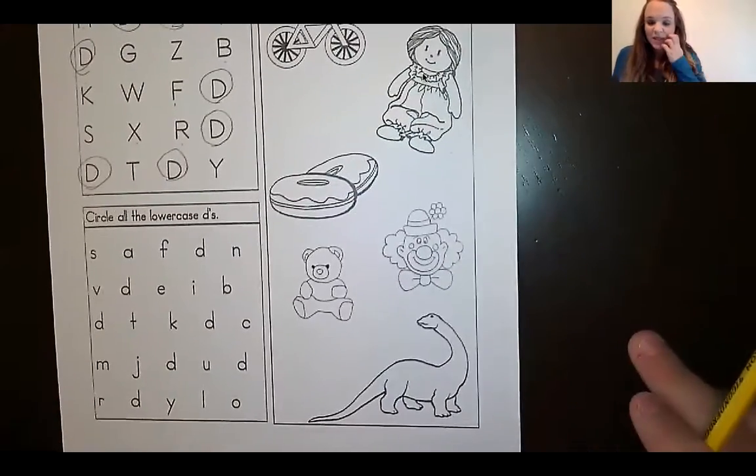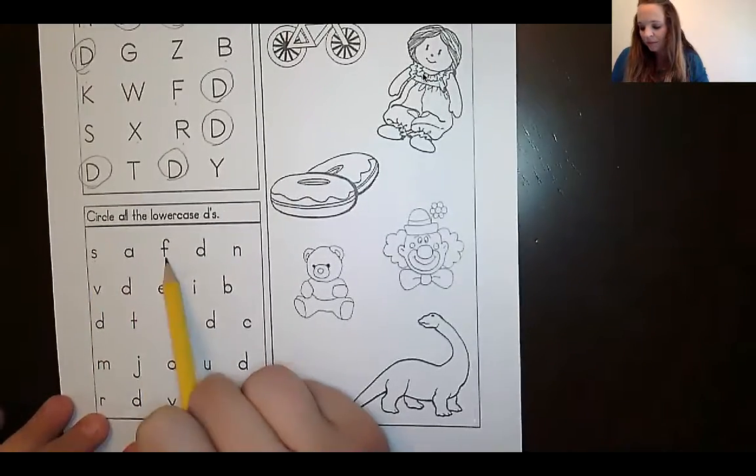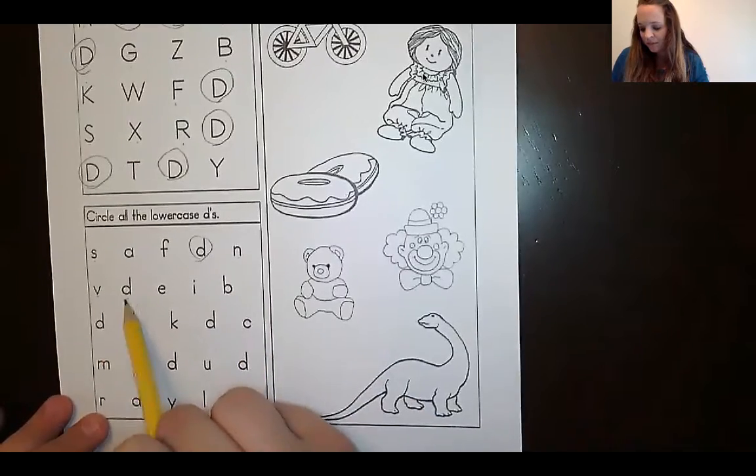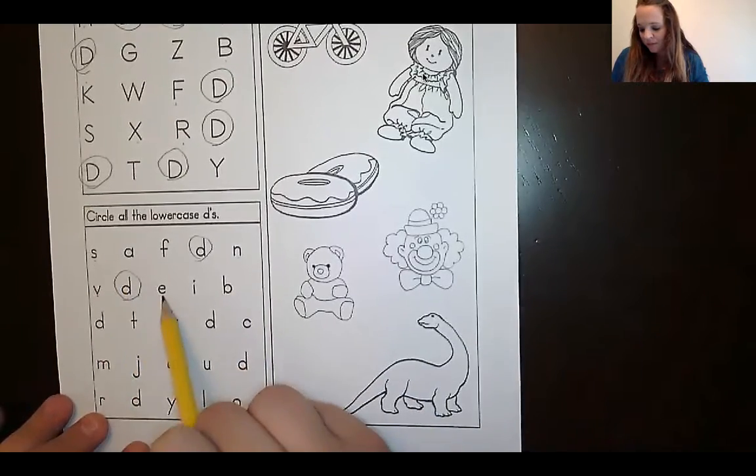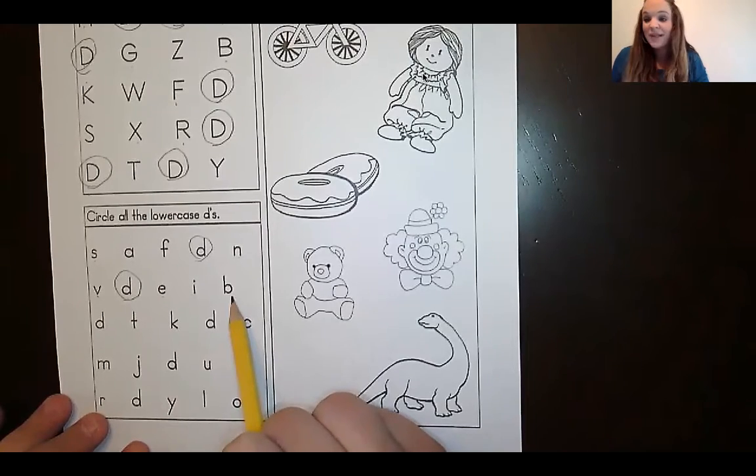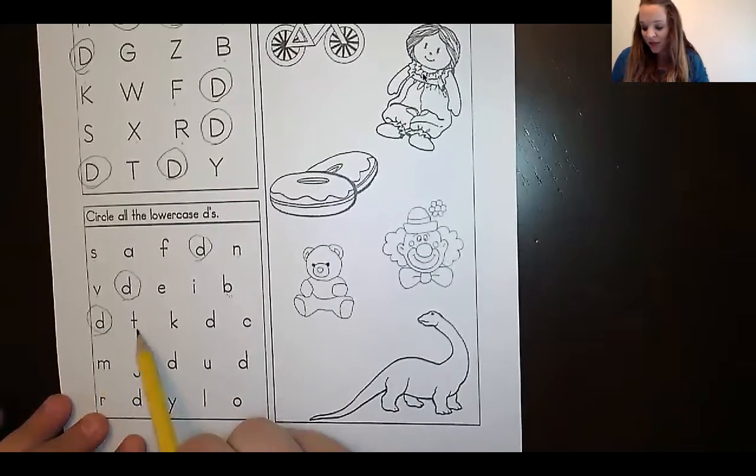All right, now we're going to do our lowercase Ds. Tell me when to stop. Here we go. What is that? This is our lowercase B. We don't want to circle that one. What about this one? Good job.